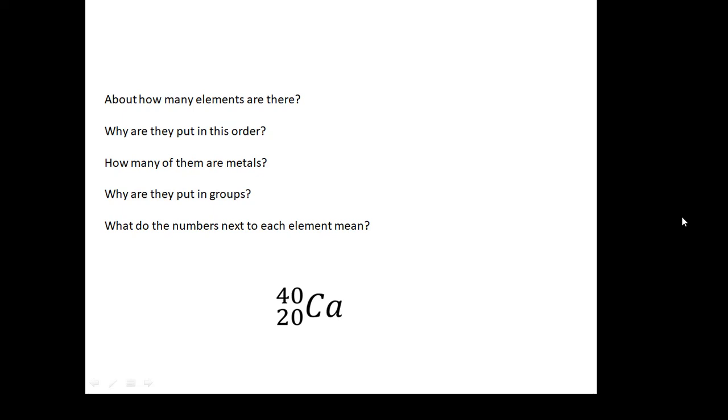Well, how many elements are there? There are 92 naturally occurring elements. Why are they put in that order? They are in order of atomic mass, so hydrogen is the lightest and then they get heavier and heavier. How many of them are metals? About three quarters. Why are they put in groups? Because each group has elements with similar properties. This is why it's called the periodic table, because these properties appear periodically.